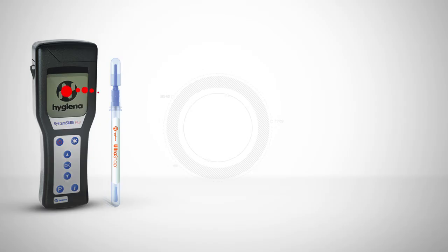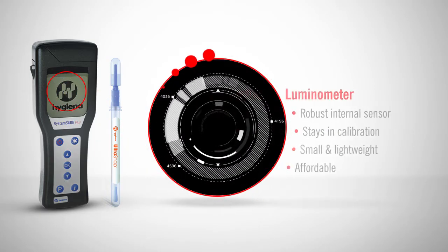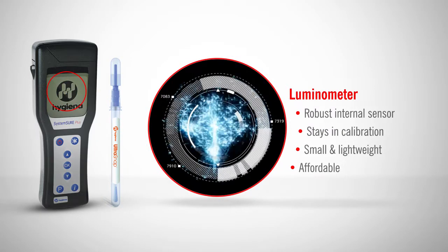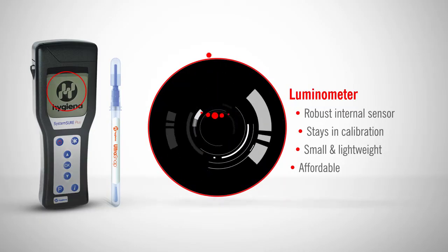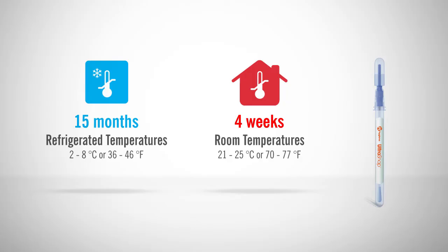The Luminometer uses a small yet robust internal sensor that stays in calibration and allows our device to be small, lightweight, and affordable. UltraSnap has a shelf life of 15 months at refrigerated temperatures and 4 weeks at room temperature.